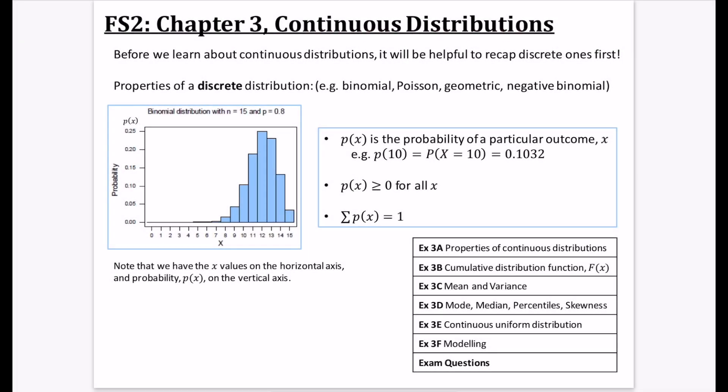We're on to chapter three which is continuous distributions. Before you do this I would really recommend that you've done differentiation and integration from pure year one because we're going to be doing lots of calculus in this chapter, mostly integration but also some differentiation. I'd also recommend from further stats one that you have done discrete random variables because it flows on from there.